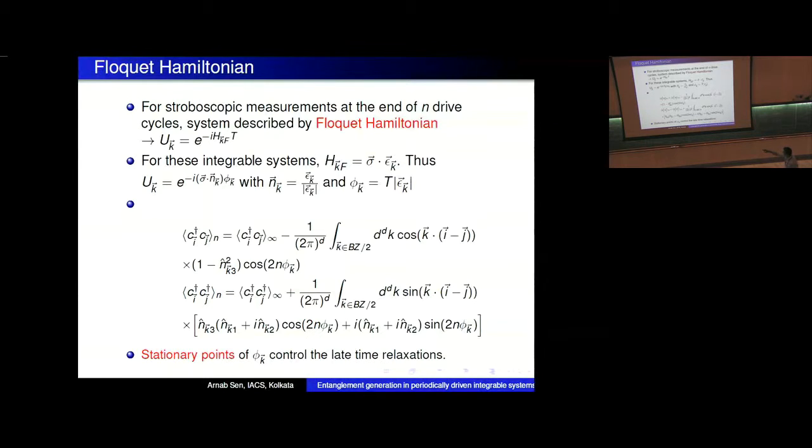You need to consider this object. You can actually show that this object phi(k), which is just proportional to the modulus of this sigma(k), actually controls the relaxation. These are some local correlation functions of the fermions, these are their infinite n values, so these are the steady state values. You can see from the structure of these integrals that what would control the late time behavior of this integral is the functional properties of this phi(k). Basically the saddle points of this phi(k) control the late time relaxations.